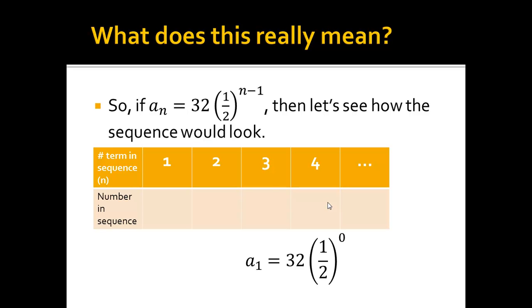Well, anything to the zero power, I'm sorry, I'd start to the first term which means I would subtract 1, because it's n minus 1, so 1 minus 1 is 0. So I would get 1 half to the zero power. Anything to the zero power is 1. So the first term is 32.